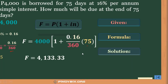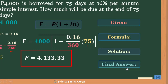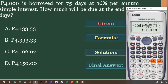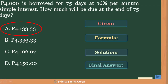That is equivalent to 4,133.33, and this is our final answer. Going back to our options, we have 4,133.33, which is equivalent to letter A. So 4,133.33 will be our answer for this problem.